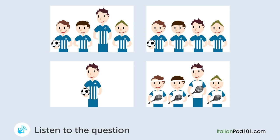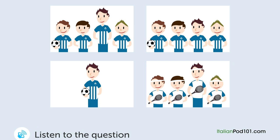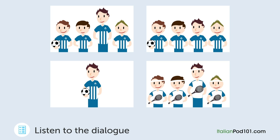A man and a woman are looking at a photo. [Question: What photo are they looking at?] "Is this the photo of your son's football team, right? Which one is your son?" "This one." "Ah, he's the tallest on the team. He's taller than me."